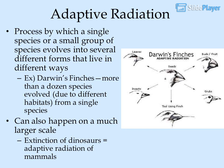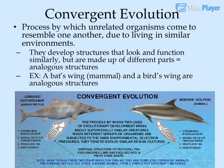Adaptive radiation is the process by which a single species or small group of species evolves into several different forms that live in different ways. For example, Darwin's finches — more than a dozen species evolved from a single species due to different habitats. This can also happen on a much larger scale: the extinction of dinosaurs led to the adaptive radiation of mammals. Convergent evolution is the process by which unrelated organisms come to resemble one another due to living in similar environments. They develop structures that look and function similarly but are made up of different parts — called analogous structures — such as a bat's wing and a bird's wing.